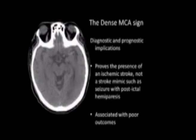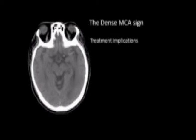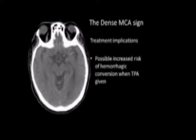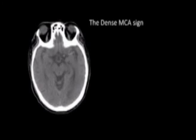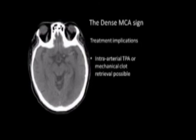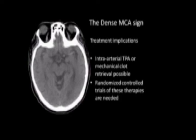The dense MCA sign is associated with poor outcomes. It also has treatment implications: there is an increased risk of hemorrhagic conversion when tPA is given in the presence of the dense MCA sign. Manufacturer and FDA warnings indicate a relative contraindication to tPA administration when the ischemic region is greater than one-third of the MCA territory, which is always the case when the dense MCA sign is present. Other treatment implications require further investigation. Some investigators have suggested intra-arterial tPA or mechanical clot retrieval for patients with the dense MCA sign; however, randomized controlled trials of these therapies are still needed.